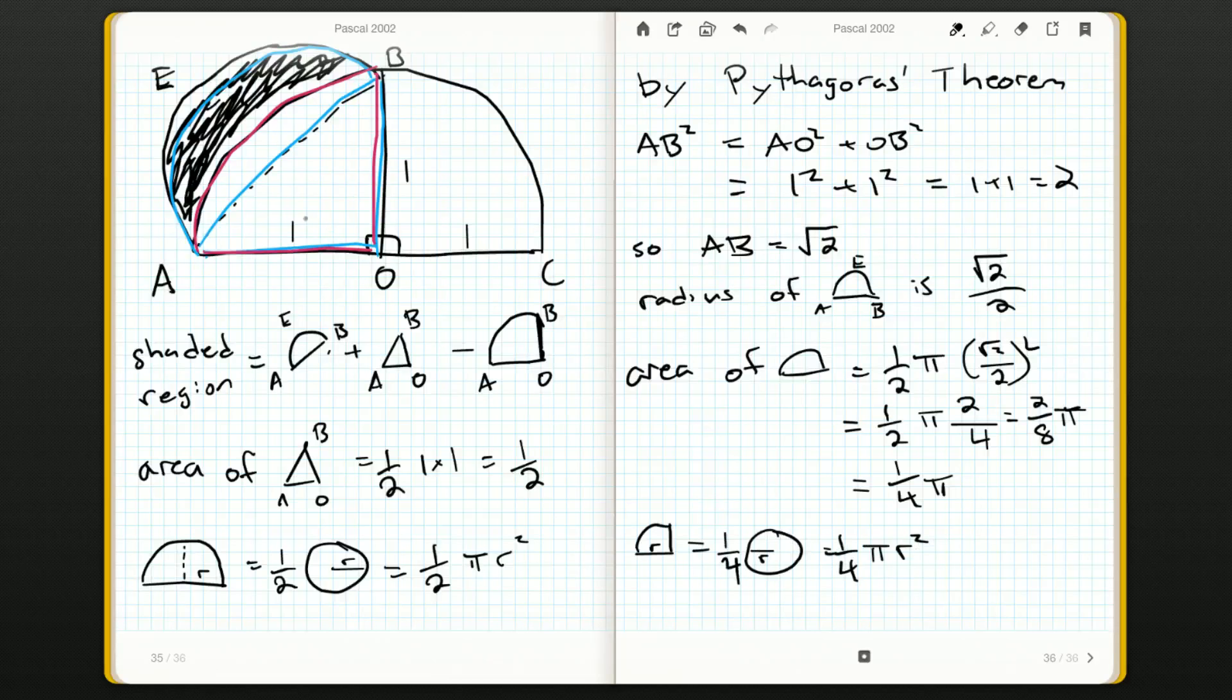If we just knew the radius of this quarter circle we'd be all set, but we do—it's one, they tell us that in the problem. So that's one-quarter pi r squared, so one squared, and that's just going to be one-quarter pi.